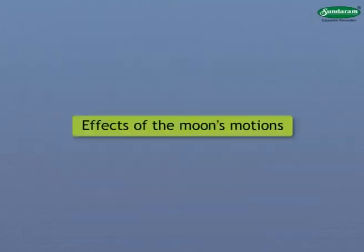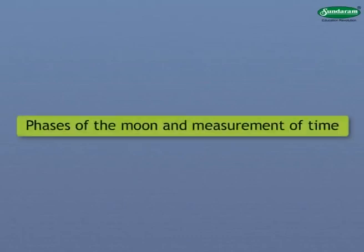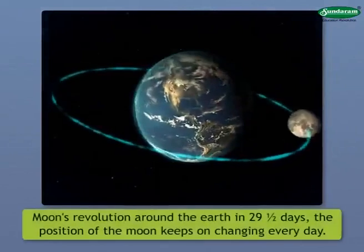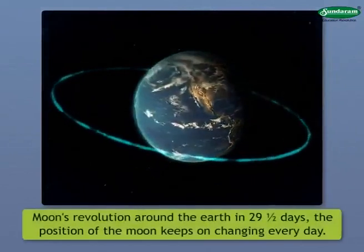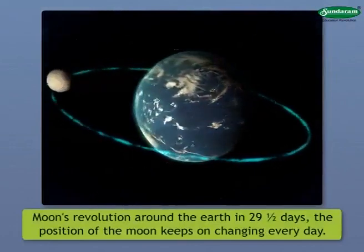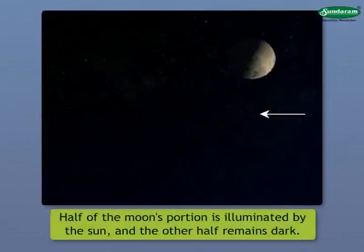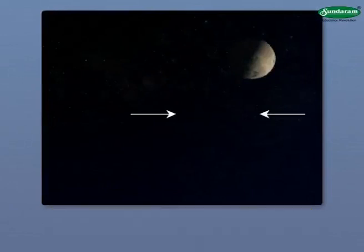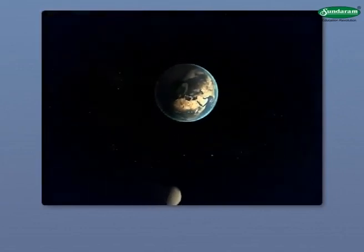As a result of the Moon's revolution around the Earth in 29 and a half days, the position of the Moon keeps on changing every day. Half of the Moon's portion is illuminated by the Sun and the other half remains dark. However, only some part of this illuminated portion of the Moon can be seen from the Earth due to the Moon's motion along its orbit.